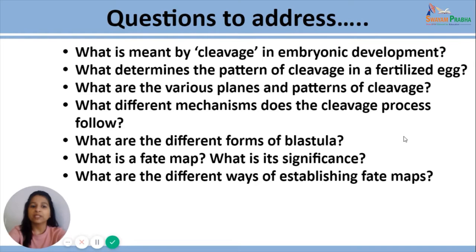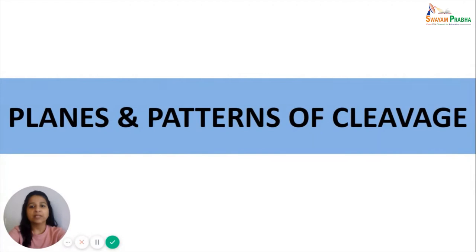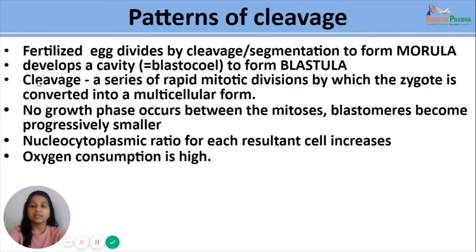Let us begin with the planes and patterns of cleavage. After fertilization the egg divides by a number of divisions known as cleavage or segmentation to form a solid ball-like structure known as morula. The morula soon develops a cavity known as blastocele and the next developmental stage so formed is called blastula. All these series of rapid mitotic divisions which the zygote undergoes to convert it into a multicellular form are known as cleavage or segmentation.